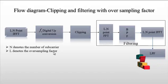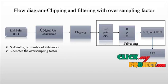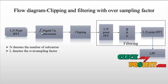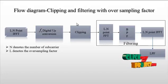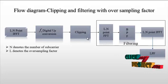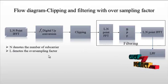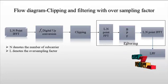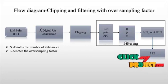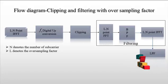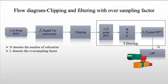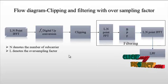Here, L denotes the oversampling factor and N denotes the number of subcarriers, forming the L·N point IFFT process. Then Fc — the carrier frequency — is used for digital upconversion. Clipping is then applied to clip the signal values. After an L·N point FFT, a BPF — bandpass filter — is used to reduce noise, followed by another L·N point IFFT. Finally, an LPF — low pass filter — is applied.